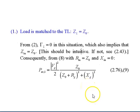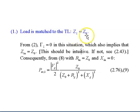Case 1: The load is matched to the transmission line. When we say the load is matched, Z_L equals Z_0 — the impedance at the load equals the characteristic impedance of the transmission line. When these two are matched, the reflection coefficient is equal to zero. This also implies that Z_in will also be equal to the characteristic impedance Z_0.